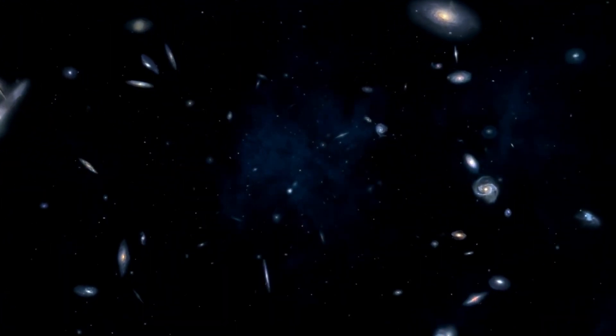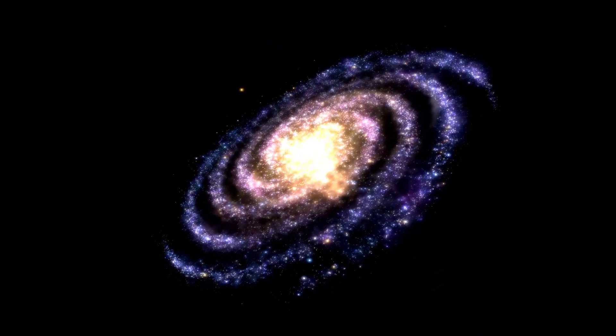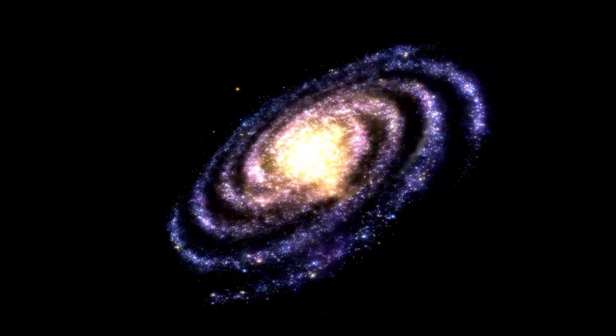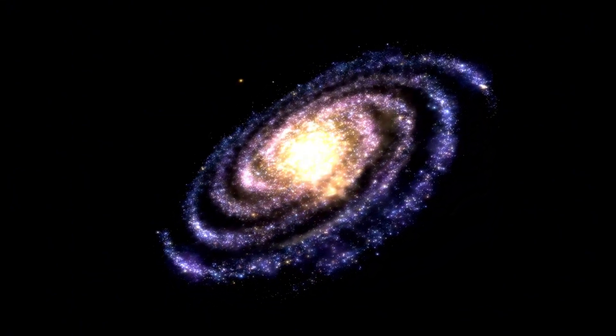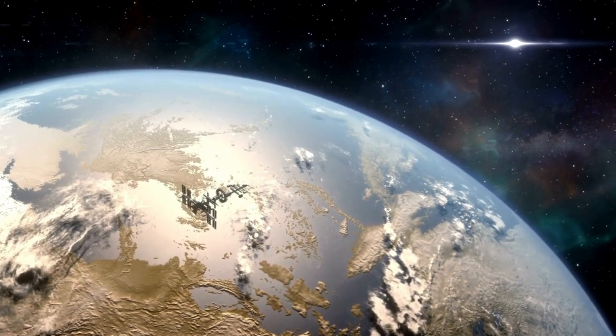Earth-sized planets with atmospheres rich in carbon dioxide, nitrogen, and oxygen could potentially support life, while the absence of certain compounds could indicate alternative forms of life or advanced civilizations.